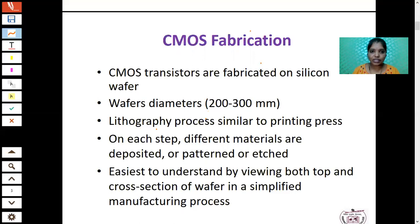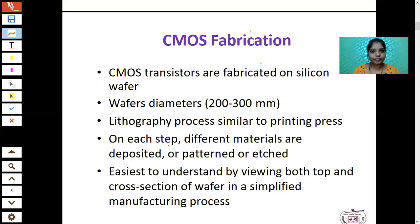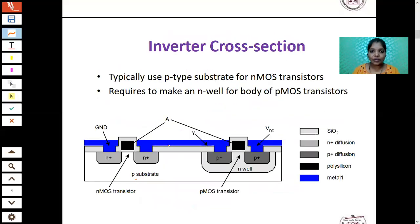The lithography process includes the photoresist, masking, etching, etc. In each step, we use different materials. While fabricating the IC, different materials are deposited, patterned, and etched. Etching is the process of removing a selected area from the wafer. It is easy to understand the manufacturing process through the top and cross-section view of the wafer. First, we are going to see the inverter cross section of the CMOS transistor.